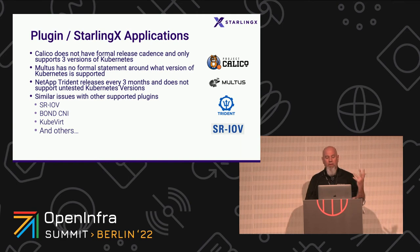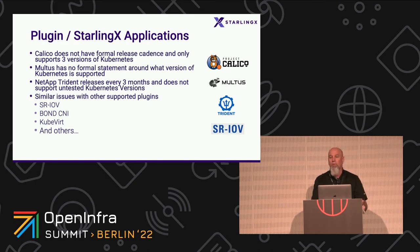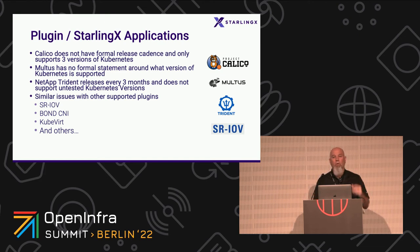Plugins present similar challenges. Calico, our CNI, doesn't have a formal release schedule and supports three versions — we want to use the latest. Multus has no formal release statement either. As we pull in new plugins, we have to verify they work with the Kubernetes version and support in-service upgrades. Some plugins like NetApp restrict loading on unsupported versions, so the project ensures everything is working and Kubernetes gets upgraded with the latest supported plugins.